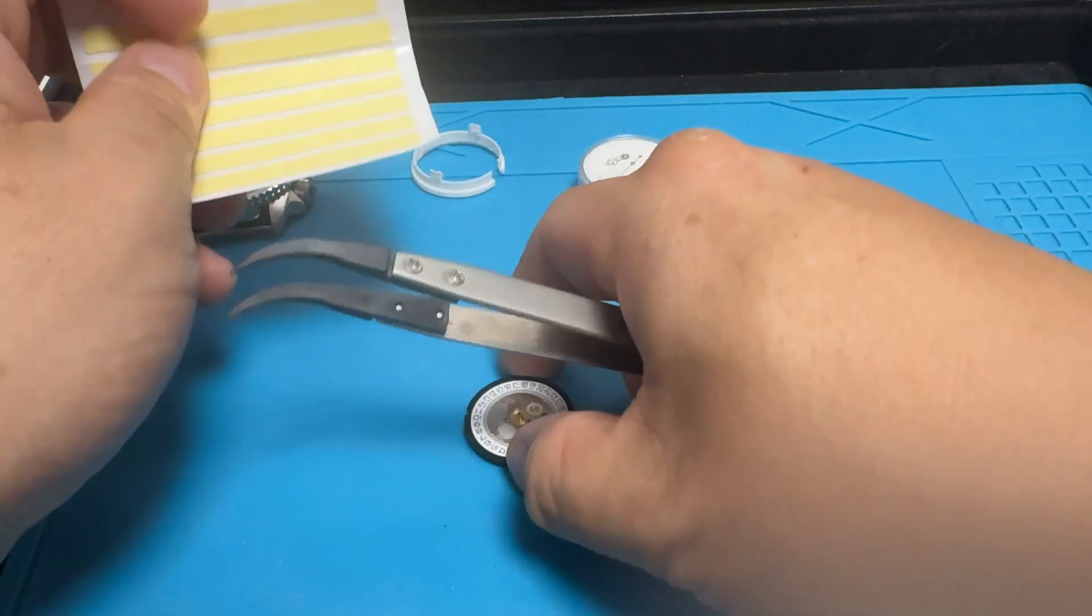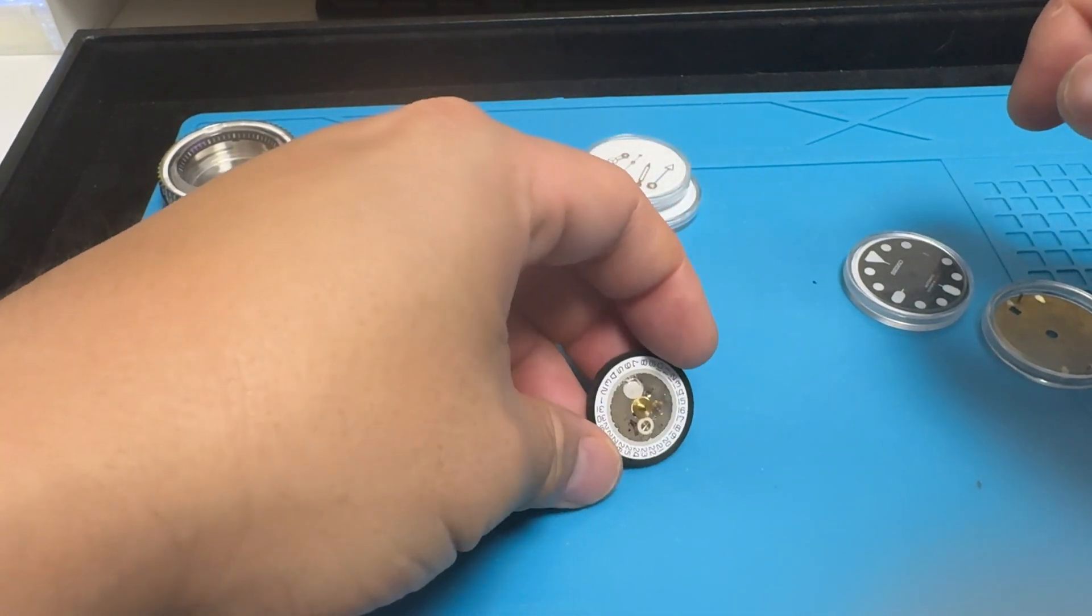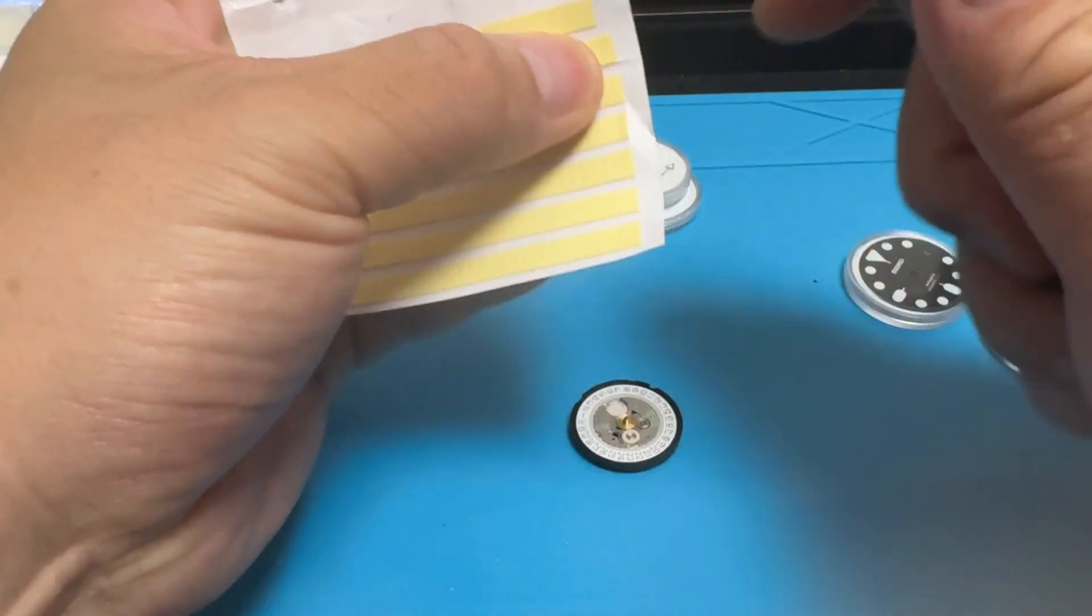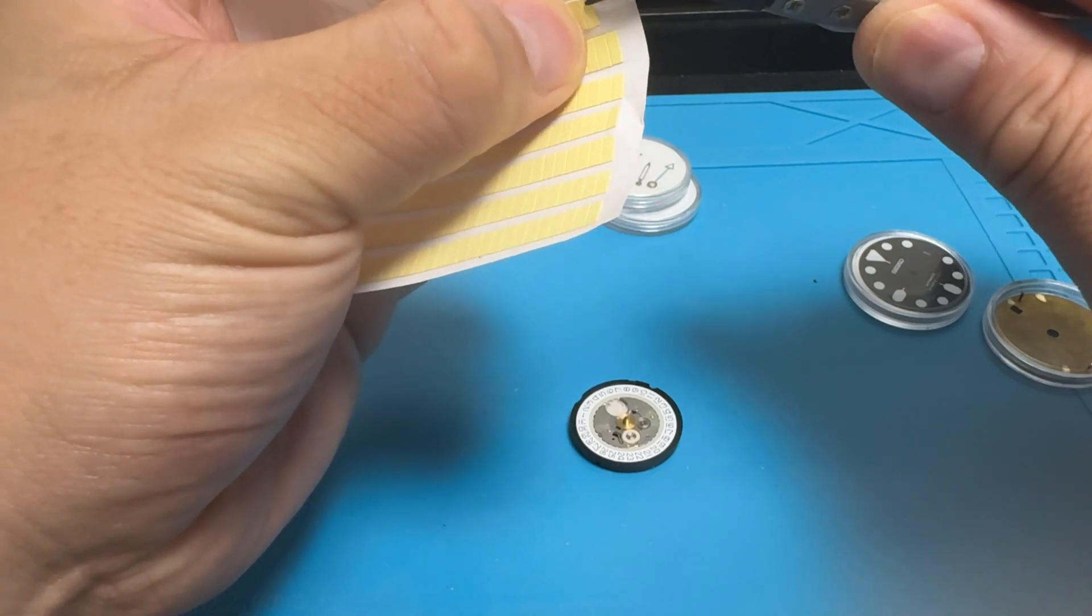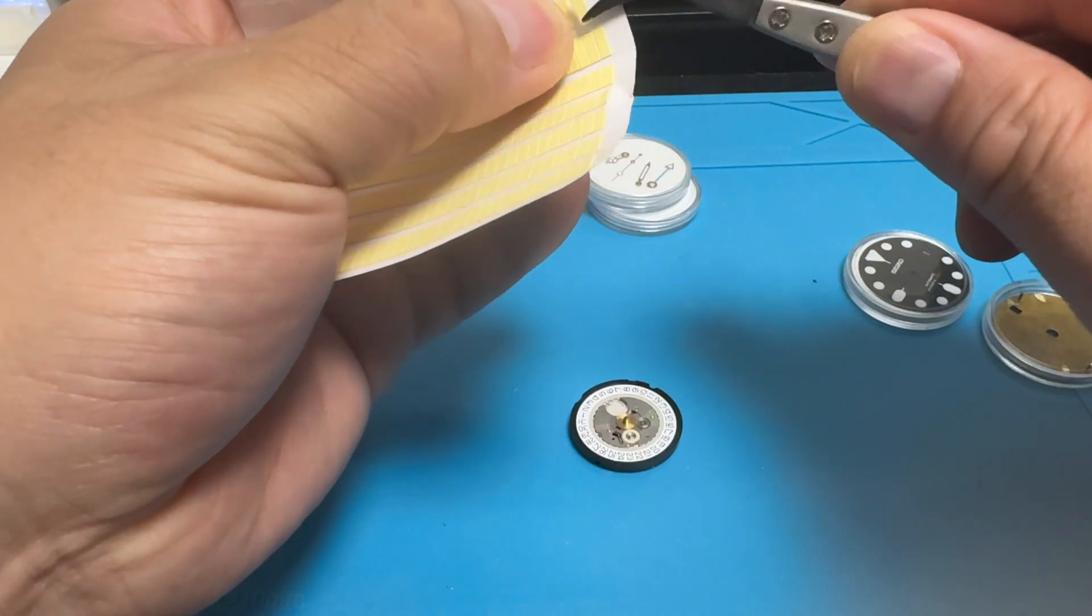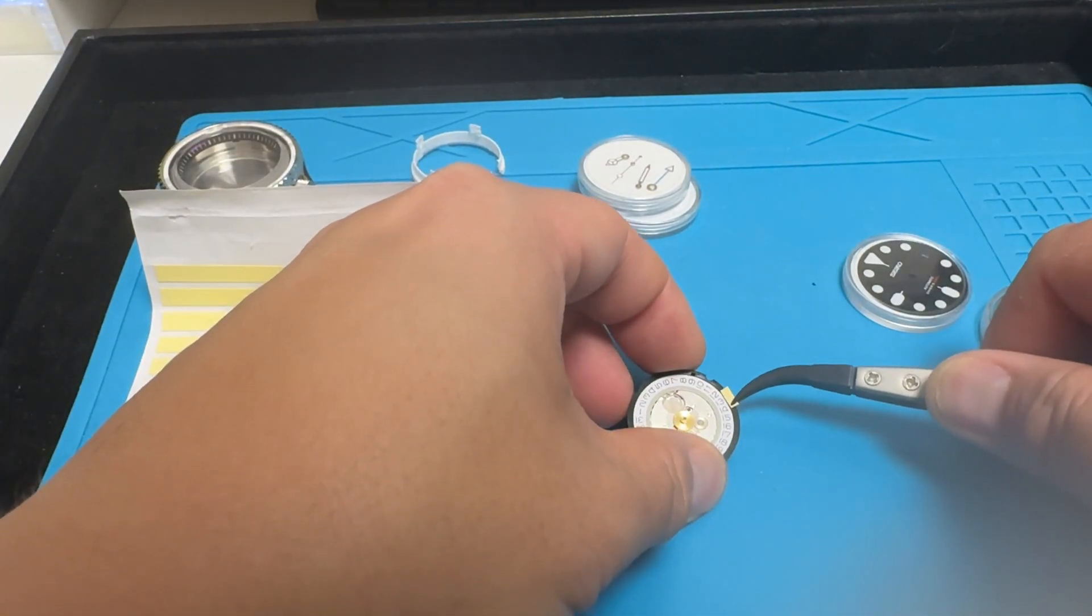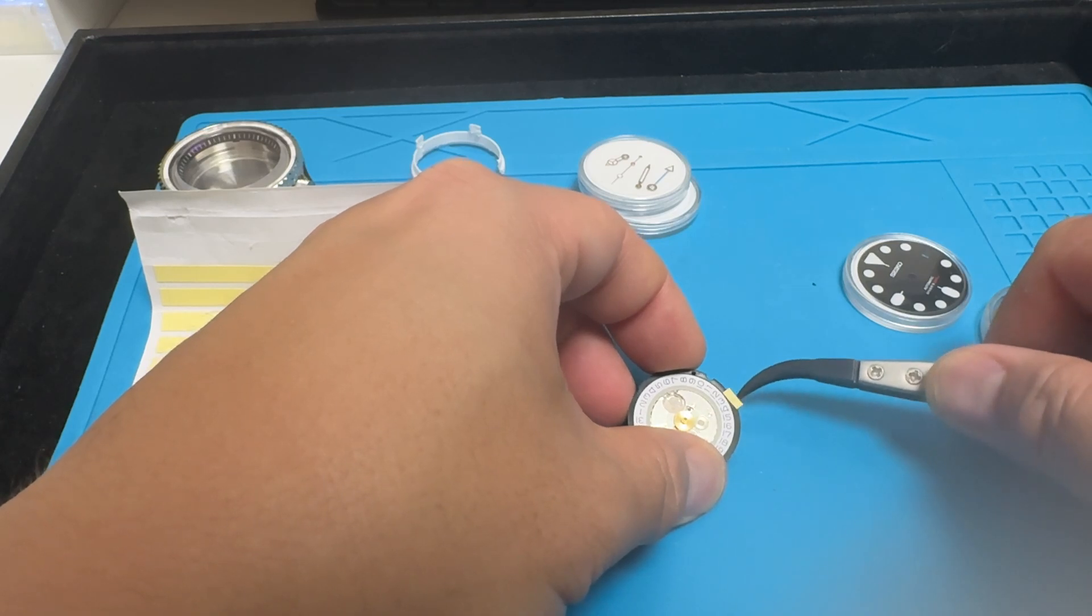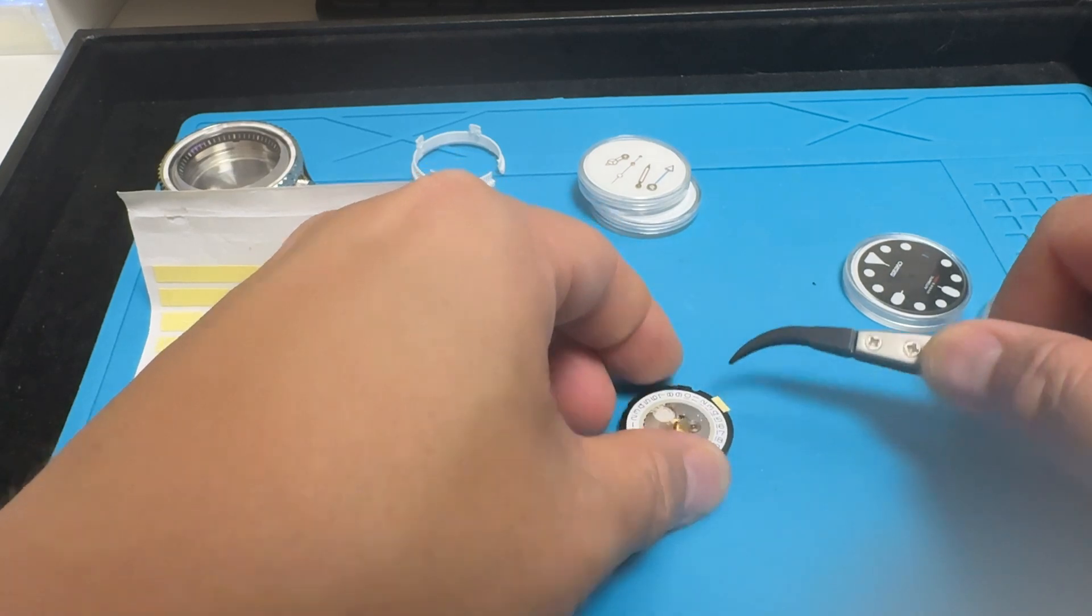The first thing we're gonna do is attach the dial to the movement. We're gonna do that with some double-sided tape. I have these pre-cut ones that you can buy from Amazon. There isn't a lot of space around the movement to stick these on, but you could put about three or four of them, just make sure they're not touching or interfering with the date wheel.